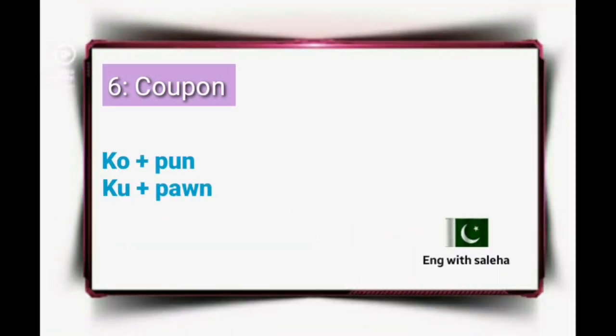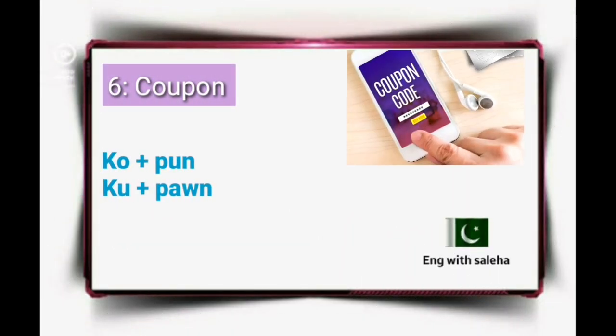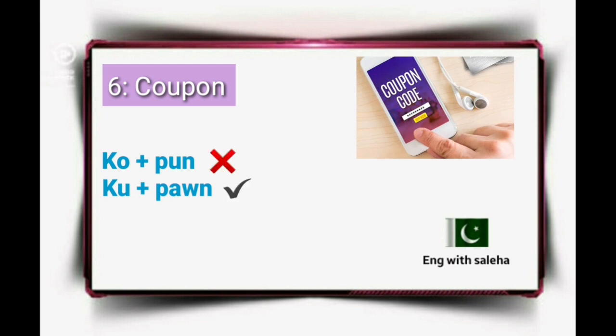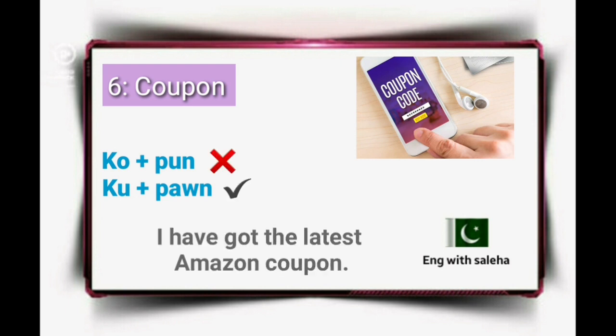Number 6: COUPON. It's not 'coupon' — it's 'coupon.' Coupon, not coupon. Example sentence: I have got the latest Amazon coupon.